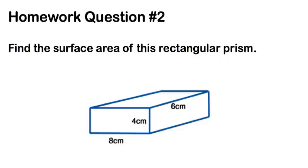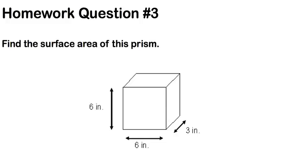Homework question 2: find the surface area of this rectangular prism. Don't forget to find the area of each side and then add them all together. If you'd like to use the quick trick, make sure you know how to do the trick and then use it to solve this. Homework question 3: find the surface area of the shape with sides 6, 6, and 3. Make sure you're recording your homework in your notebook and on the Google form.